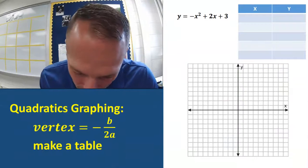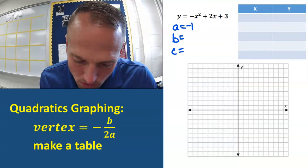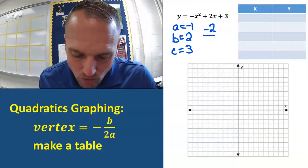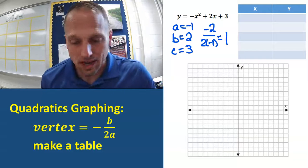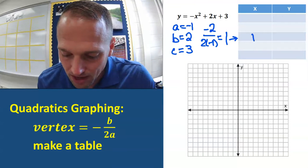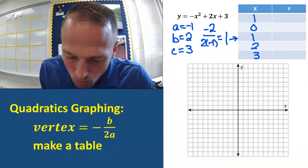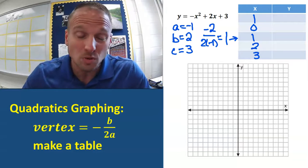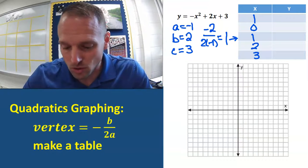Let's graph this next one. First thing we have to do is find a, b, and c. A is the number in front of x squared, b is the number in front of x, c is the number by itself. So now we'll go negative b over 2a: that's going to be negative 2 over 2 times negative 1, which is negative 2 over negative 2 — that's a positive 1. That's the x value of the vertex going right in the middle of our table. Let's count up and down: 2 and 3 going up, 0 and 1 going down. By the way, these numbers won't be the same every time — it just randomly happened that way for these two examples.